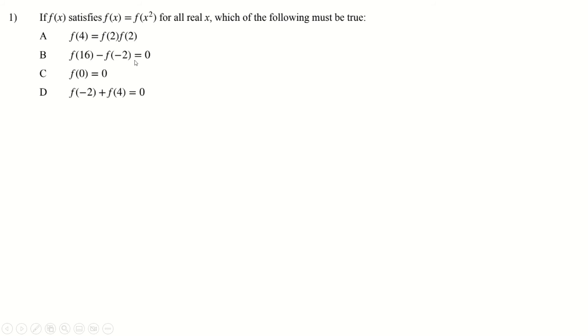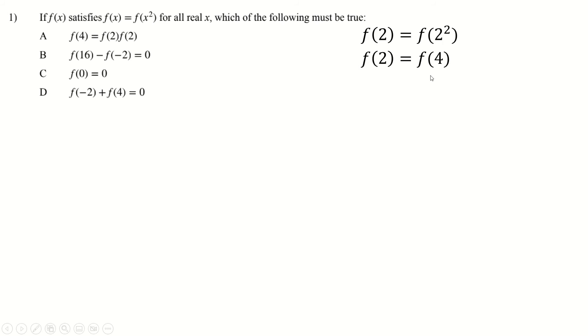We've got a function; all we know about it is f(x) = f(x²). So let's just put some numbers in. f(2) equals f(2²) equals f(4), of course. So we have this relationship now, which isn't any of these rules unfortunately, but it's okay — let's keep going.